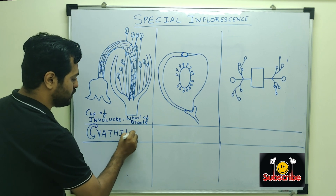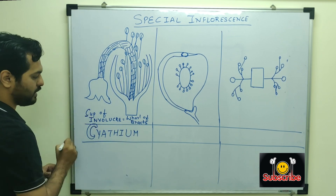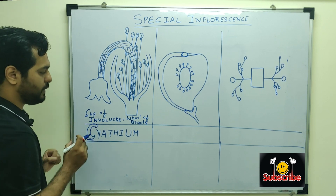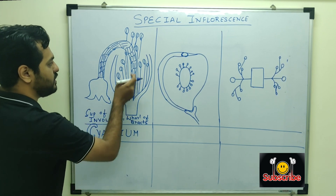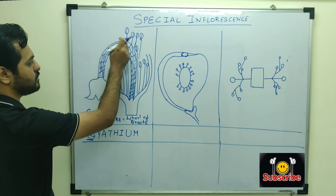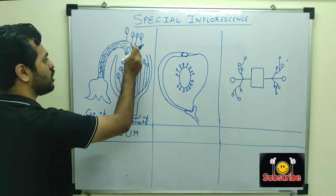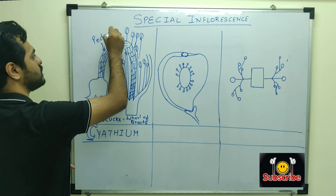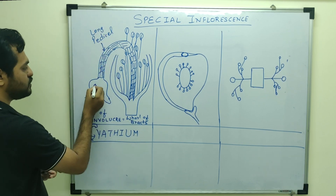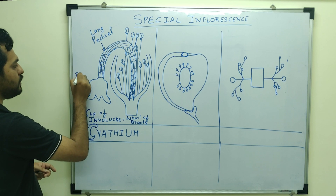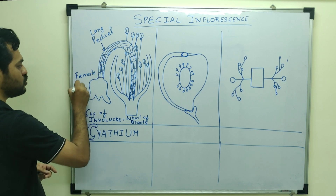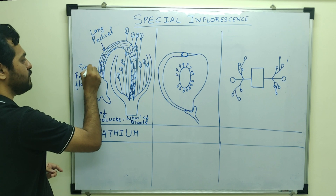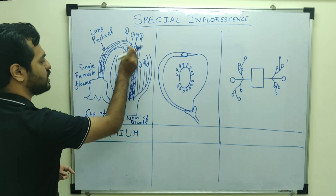This cup-shaped involucre special inflorescence is known as cyathium inflorescence. So remember: cup-like involucre — that is cyathium inflorescence. In the center of this flower there is a very long pedicel, that is why the flower grows out. And this flower that is present is a female flower — a single female flower arising from the center of the cup.